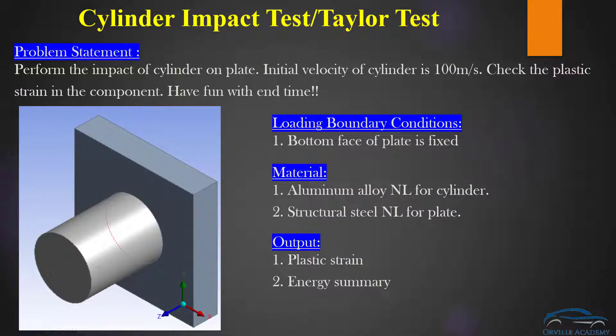Hello and welcome back everyone. In this session we are going to take a simple example to understand the procedure to perform the explicit analysis. As you can go through the problem statement, here we are trying to simulate the impact of cylinder on the plate. The initial velocity of the cylinder is 100 meter per second and our objective is to check the plastic strain in the component.